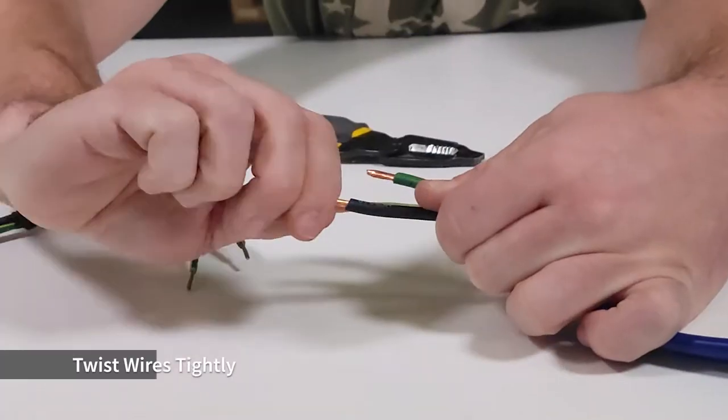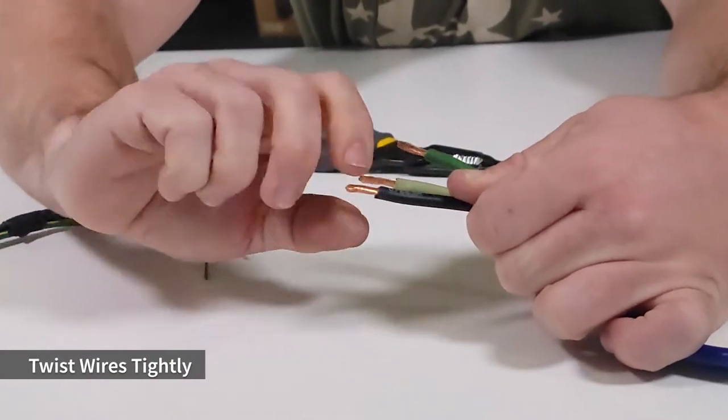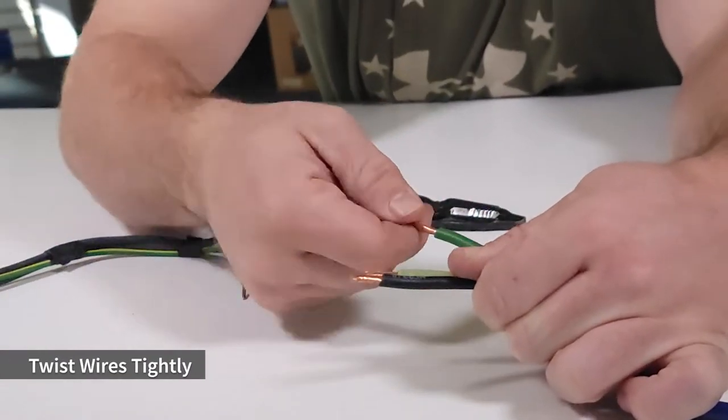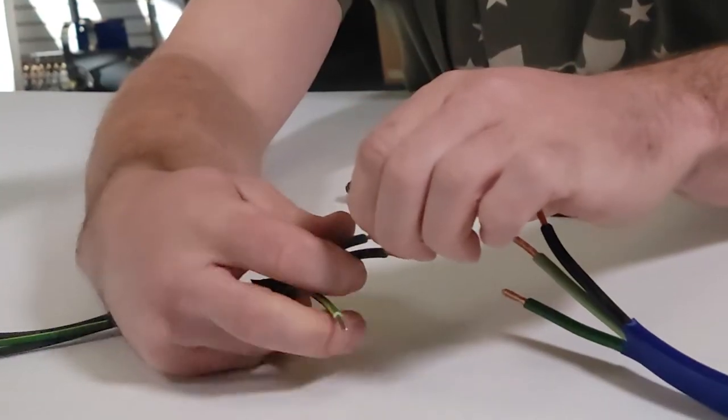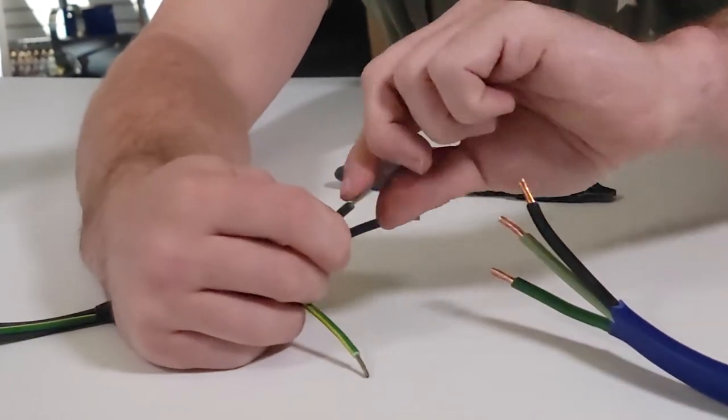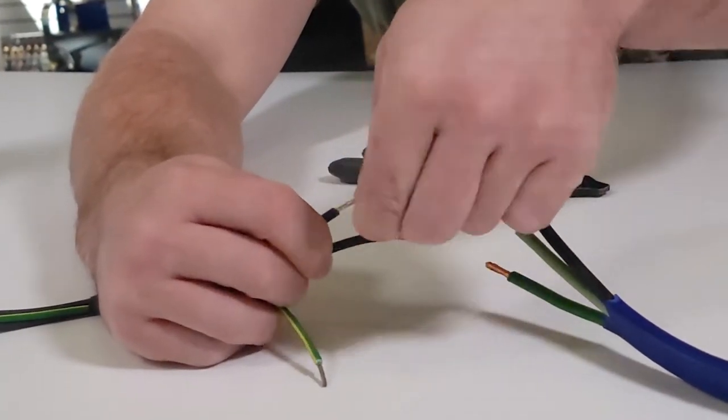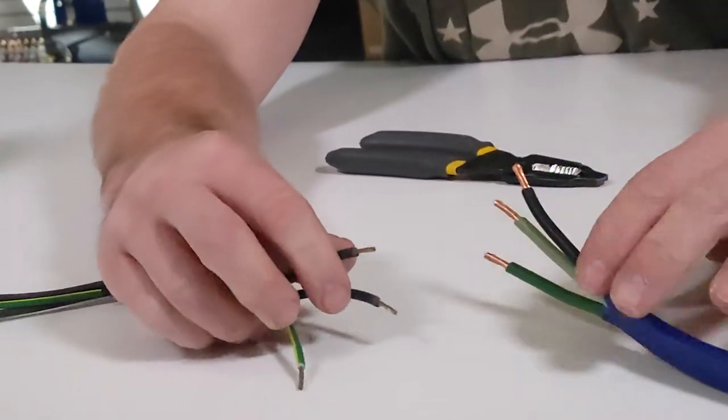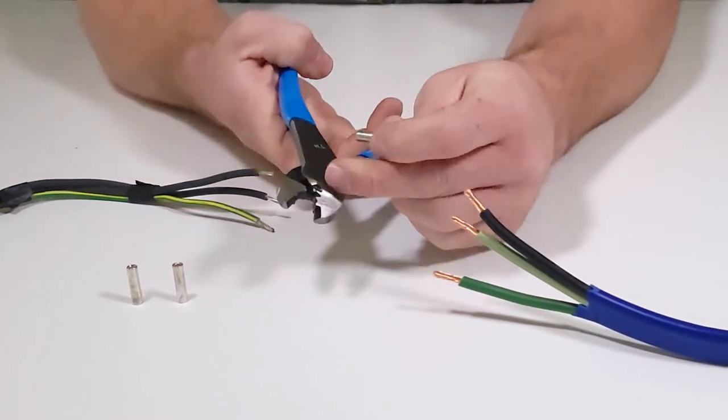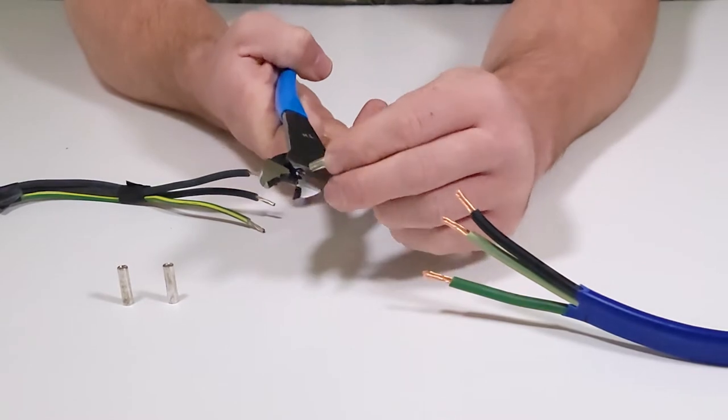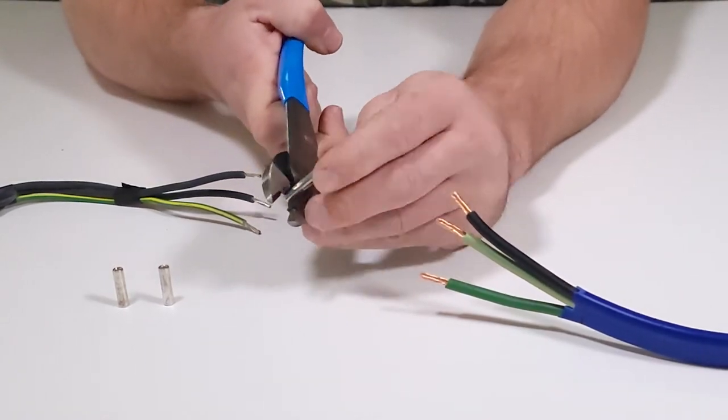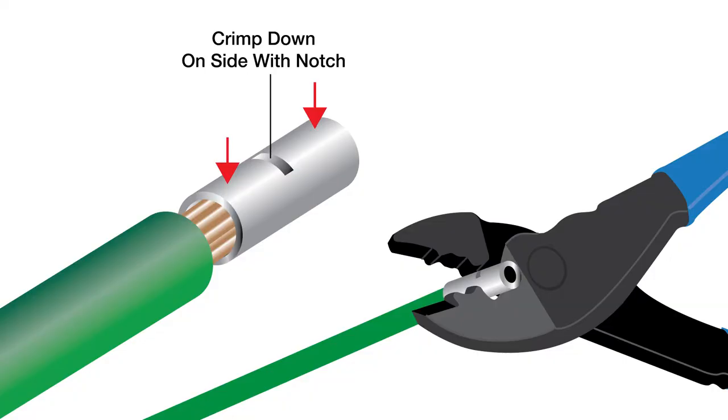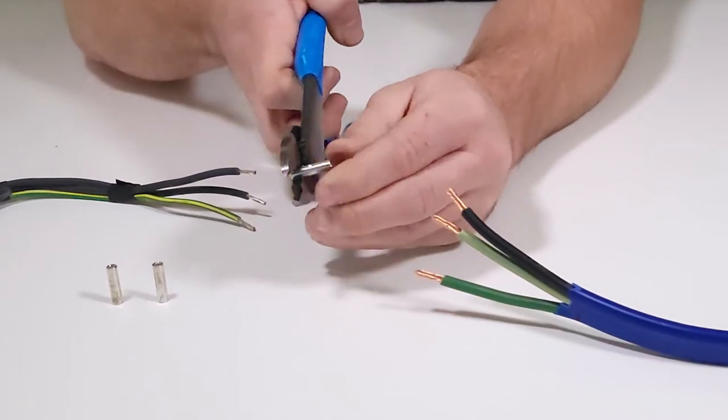Next, twist each wire to make it easier to slide into the butt splicers. Butt splicers are notched to indicate crimping direction. Insert and hold each wire from your motor firmly in the butt splicer. Notched side up, align the crimper to crimp downward and squeeze firmly. Begin by crimping all of the wires from the motor.